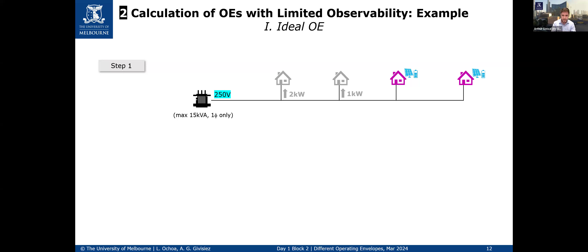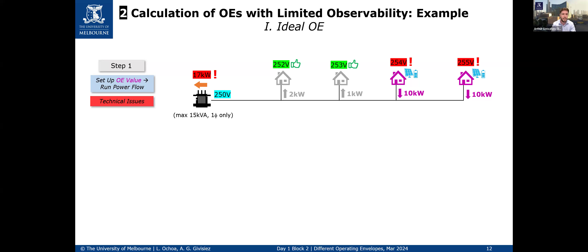Let's go to the example — the best way to understand these operating envelopes. Starting with the ideal: we have a network with two normal customers with fixed demands, and flexible customers at the end of the feeder. We have readings from the whole network: 250 volts at the head of the feeder and a maximum of 15 kVA on the transformer. It's single-phase to simplify. To calculate the OE for flexible customers, we set it to the maximum of 10 kilowatts and run power flows. In this case, there are voltage problems at the end of the feeder and over-utilization of the transformer, so we must reduce from 10 kilowatts.